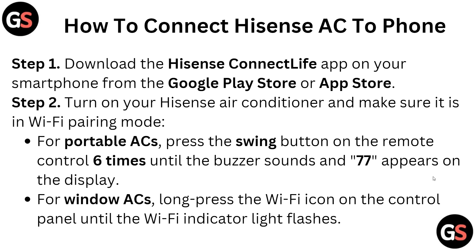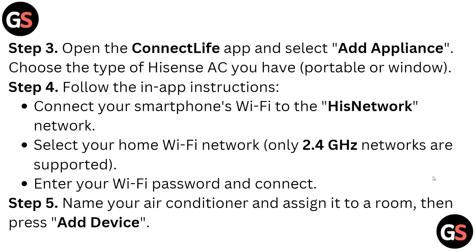Step two: turn on your Hisense air conditioner and make sure it is in Wi-Fi pairing mode. For a portable AC, press the Swing button on the remote control 6 times until the buzzer sounds and '77' appears on your display. For a window AC, long press the Wi-Fi icon on the control panel until the Wi-Fi indicator light flashes.